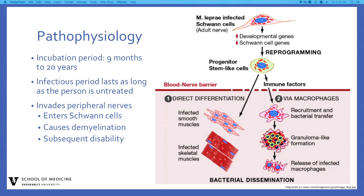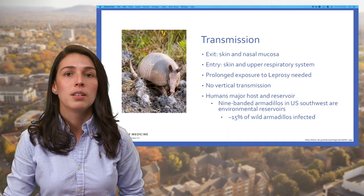There are two pathways of bacterial dissemination. The first is direct differentiation, where the cell infects the smooth muscles and then the infected skeletal muscle reproduces. The second is via macrophages: recruitment and bacterial transfer happens first, then the granuloma starts to form, followed by the release of infected macrophages to disseminate the disease.